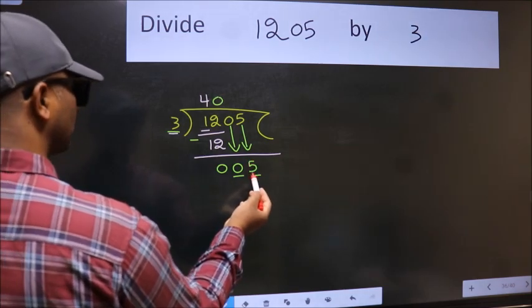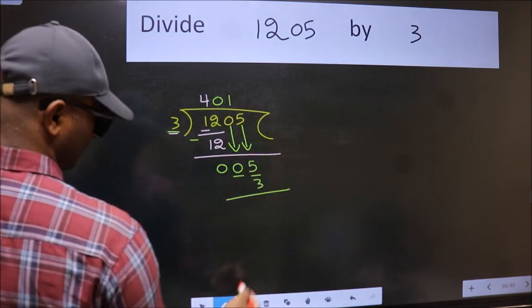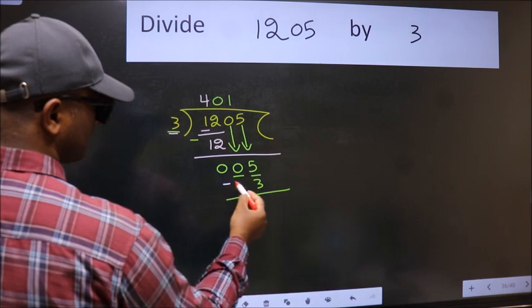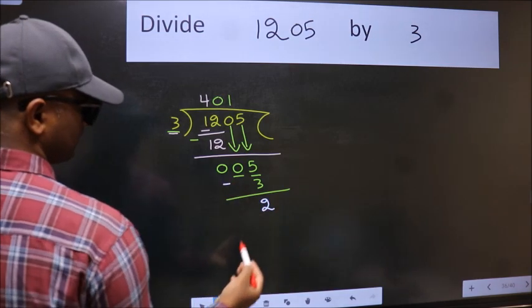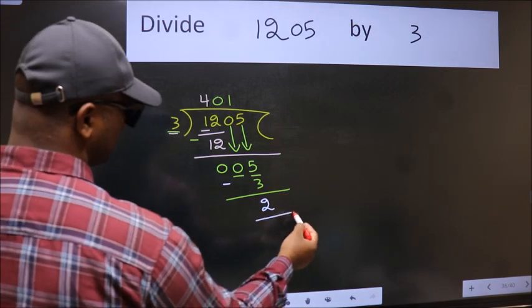A number close to 5 in the 3 table is 3 once 3. Now, we subtract. We get 2. No more numbers to bring it down. So, we stop here.